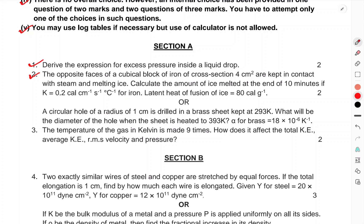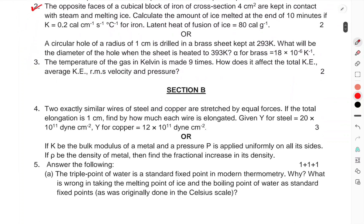Question 3, a circular hole of radius 1 cm is drilled in a brass sheet kept at 293K. What will be the diameter of the hole when the sheet is heated to 393K? Alpha for brass = 18 × 10⁻⁶ K⁻¹. Question 3 continued, the temperature of a gas in Kelvin is made 9 times. How does it affect the total kinetic energy and average RMS velocity and pressure?